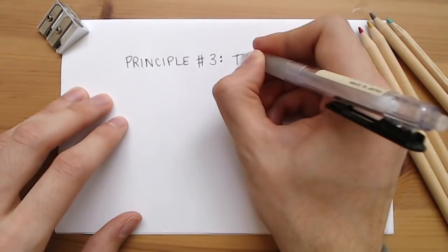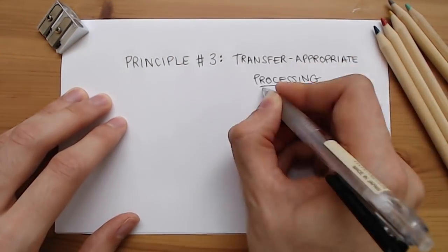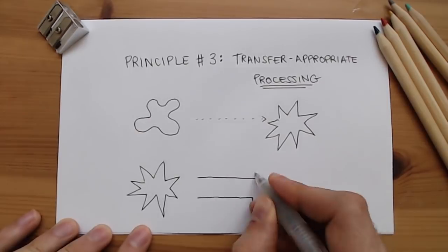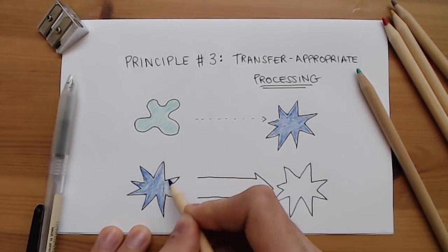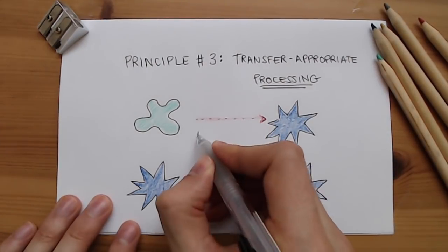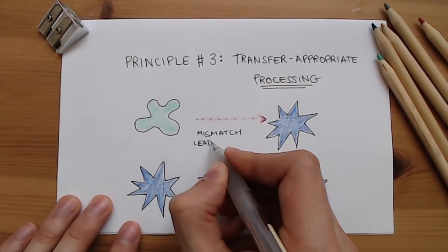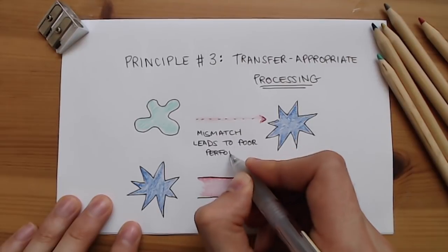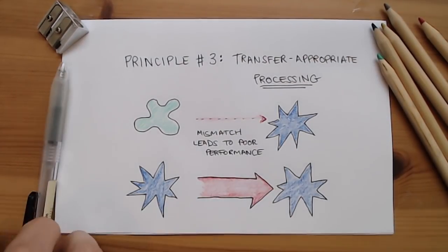So the reason for this hierarchy of practice is known as transfer-appropriate processing. This basically means that the more your practice resembles the exam, the more your practice efforts will transfer into actual results. If you don't have access to high-quality problem sets, as is often the case in non-technical classes, a good solution is to do a writing prompt. So pick a concept, theme, or big idea, and then try to explain it succinctly and accurately without opening the book. Then re-read it to see if you got it right.